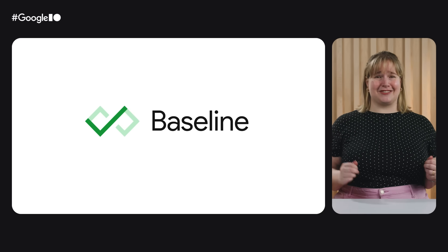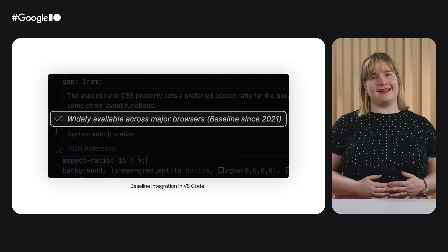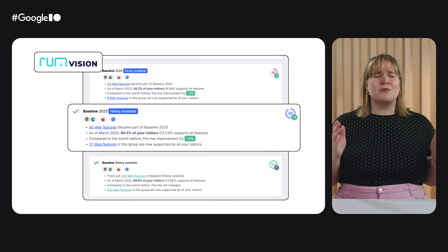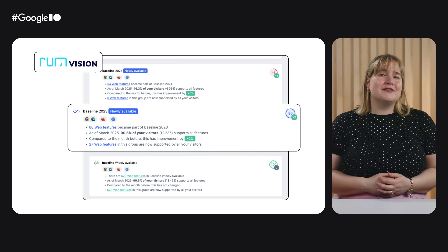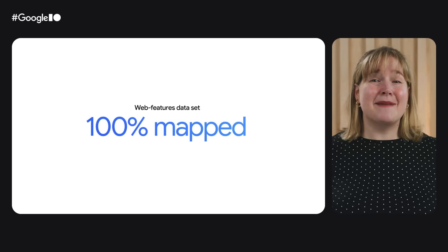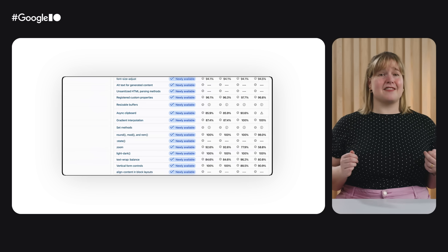We're more than halfway through, and recapping I/O isn't complete without some baseline updates. Many of your favorite tools now have baseline integrations. You can see the baseline status and browser support for features in IDEs such as VS Code as you're building. ESLint gives you a heads up when you're about to use a feature that's newer than your baseline target. And RumVision combines baseline data with real user metrics, making it easy to select the baseline version that works best for your users. The web platform dashboard now has the web features dataset 100% mapped, so you can see the baseline status of every single feature across all major browsers.